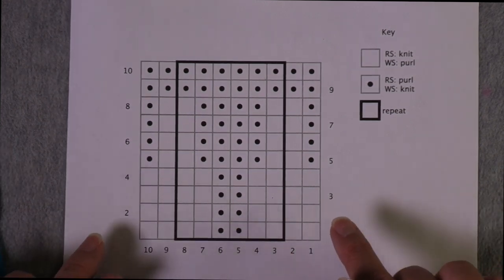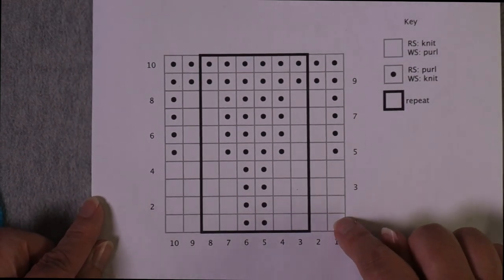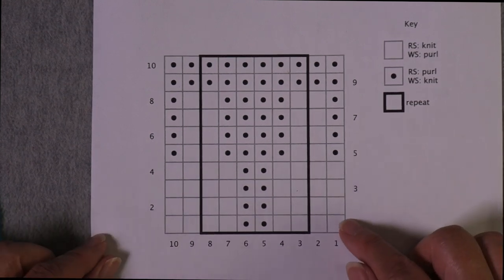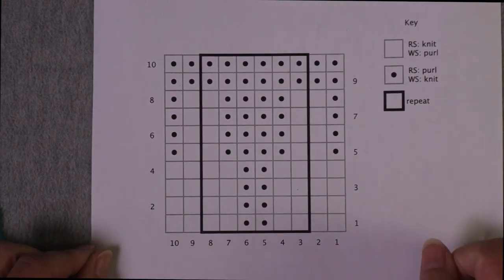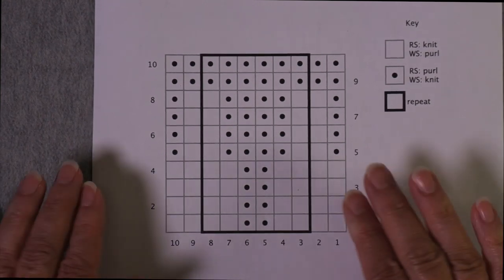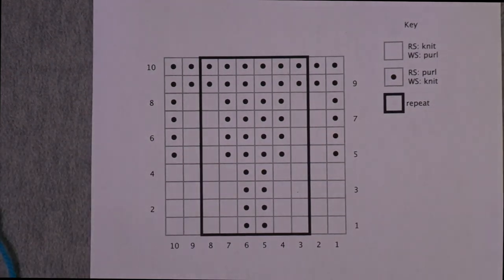And this is where some knitters get a little confused. They want to know why does one symbol have to represent two different actions? Why can't a box that is blank mean that you always knit it, whether it's the right side of the work or the wrong side of the work? Well, again, remember, this is representing what the finished work is going to look like.